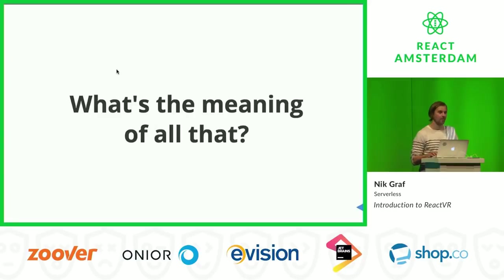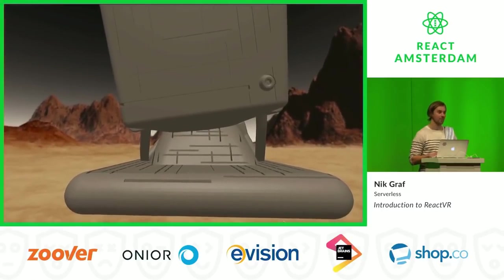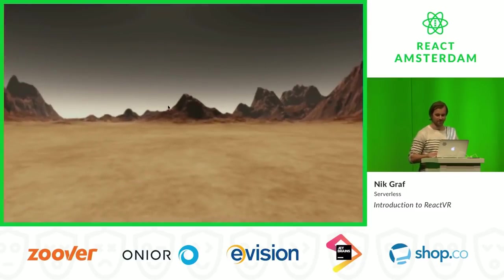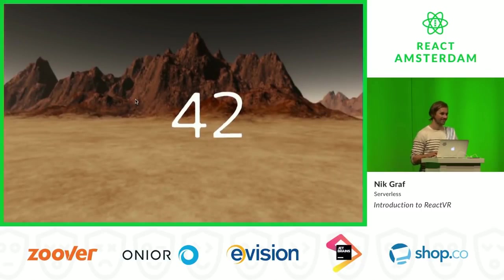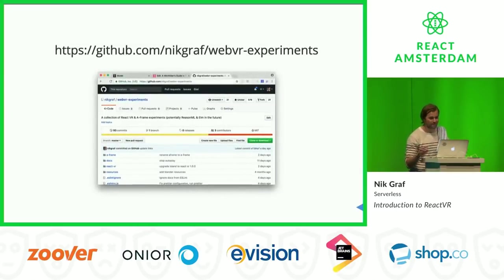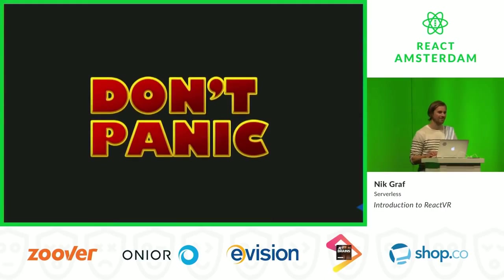Last but not least, what is the meaning of all this? Well, we can ask our good old friend Deep Thought, and Deep Thought told me it's 42. If you're still not convinced, I put almost all of my experiments in a GitHub repository at slash NickGraf slash vr-experiments, and you can try all of that by yourself — broken down to each step that I personally experimented with and discovered. And don't forget: never panic. Thank you very much.